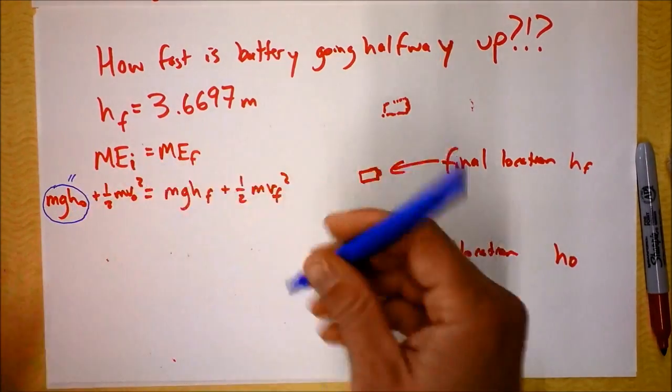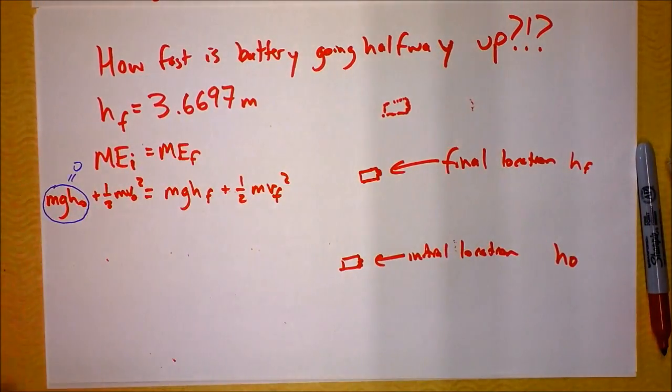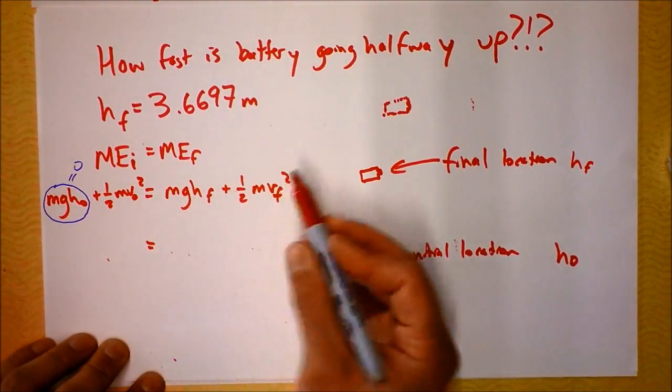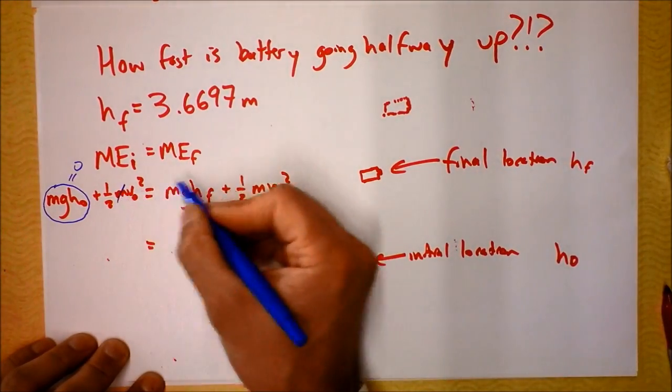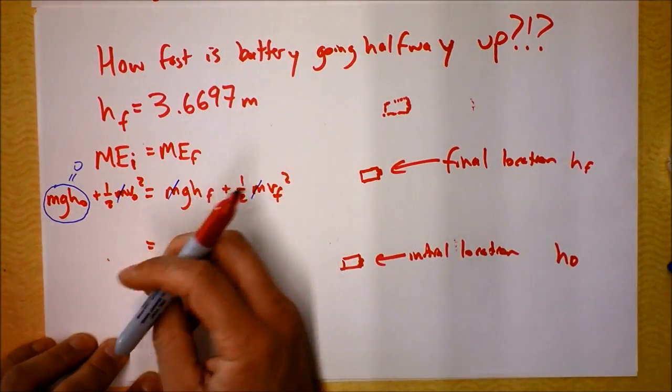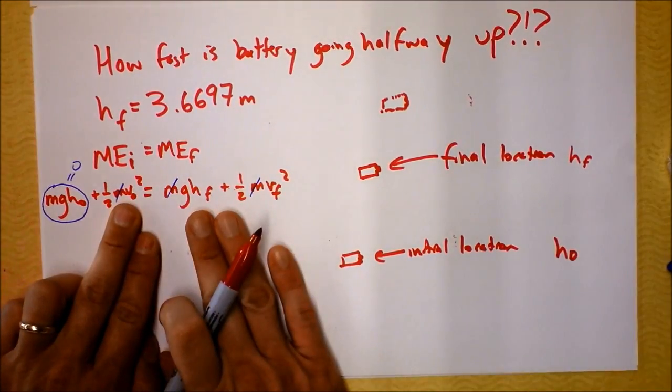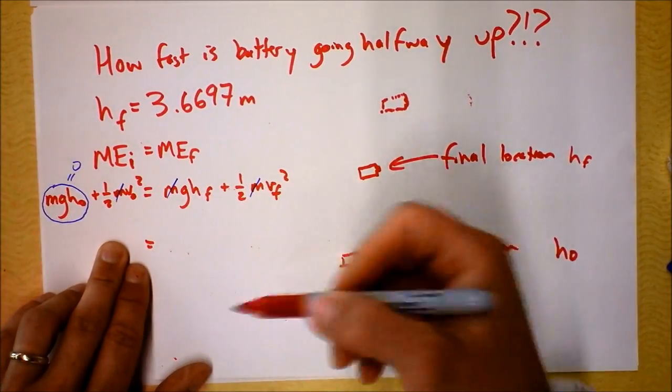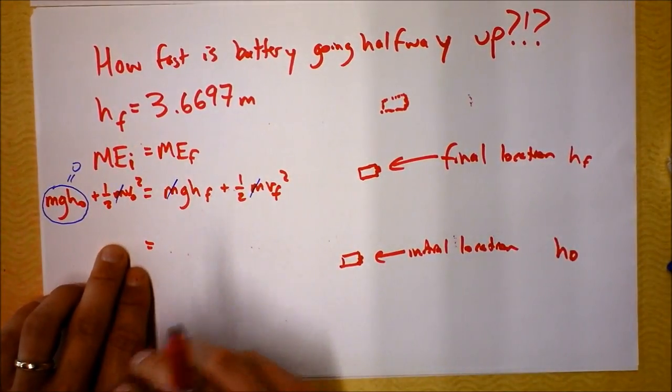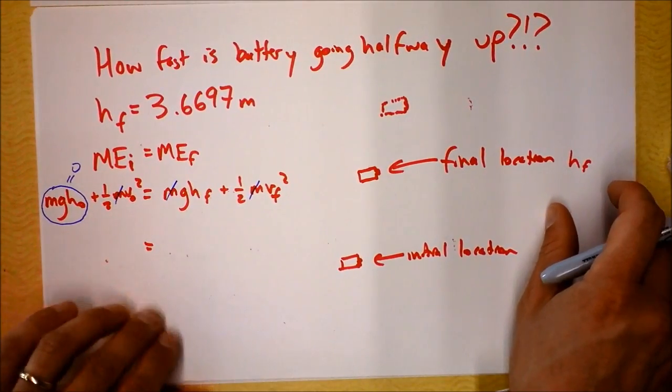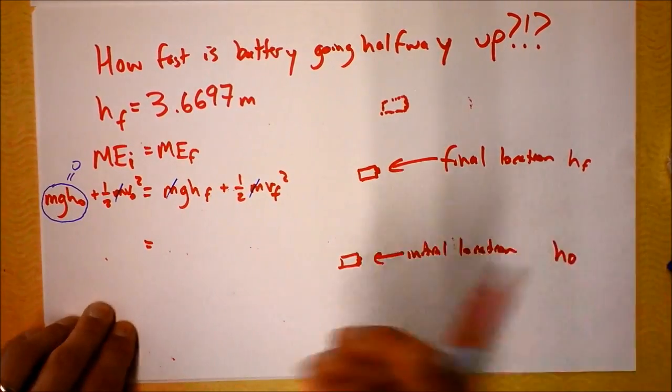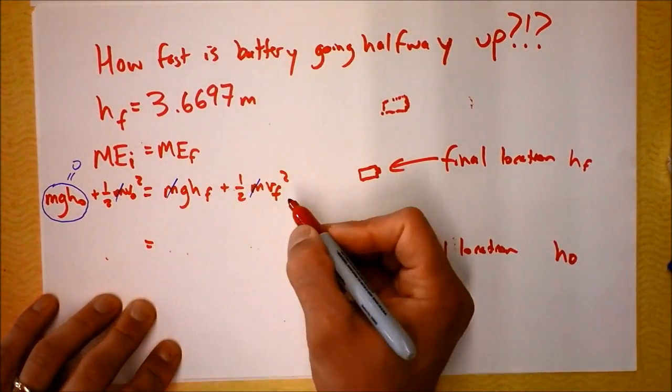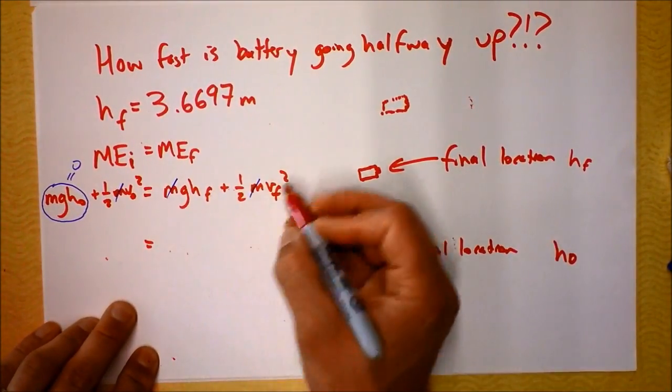Now I will take this equation. Notice all the M's, let's cancel them right now. Mass of the object doesn't matter. That's the hint that we can go back to kinematics when the mass cancels out. We're trying to find how fast is the final, so I'm going to multiply by 2.